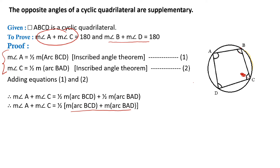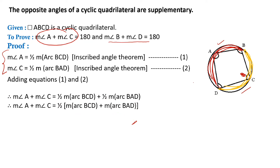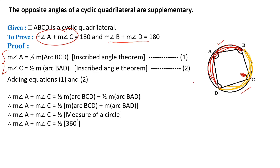Arc BCD and arc BAD together form a complete circle. We can see in this figure that arc BCD and arc BAD together make the full circle, and the measure of a circle is 360 degrees. So these two arcs are replaced by 360 degrees, giving us half times 360 degrees.